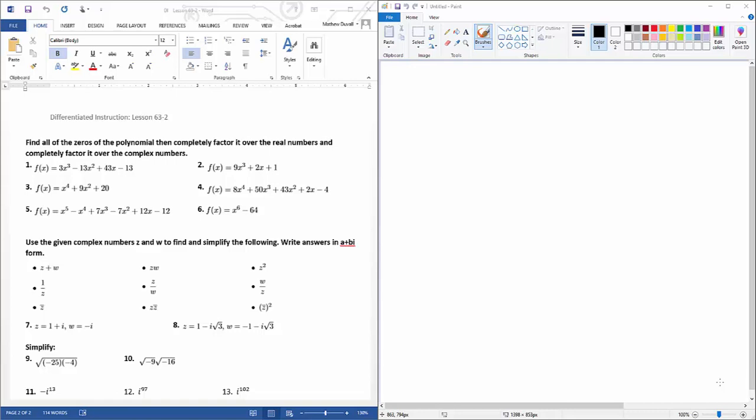Alright, lesson 63-2. We're going to take a look at the DI. So number one, this is 3x cubed minus 13x squared plus 43x minus 13. Now I know because of the fundamental theorem of algebra, because my degree is 3, that means I'm gonna have three zeros and they could either be imaginary or real.